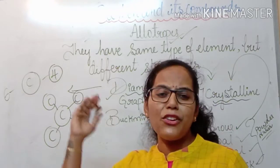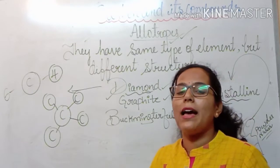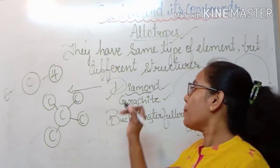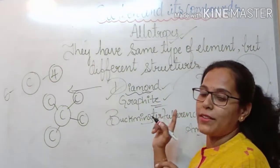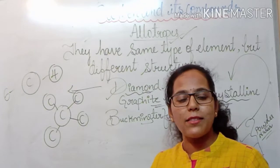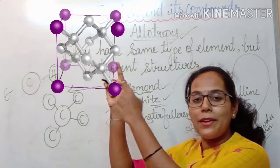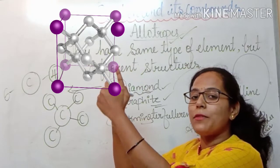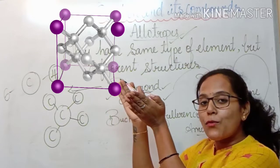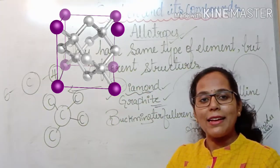As I mentioned at the start of the lessons, most carbon compounds are poor conductors of electricity, except graphite. So diamond is a poor conductor of electricity. And here you can see how each carbon atom is bonded to 4 other carbon atoms. As a result of this kind of formation, diamond has a rigid structure.